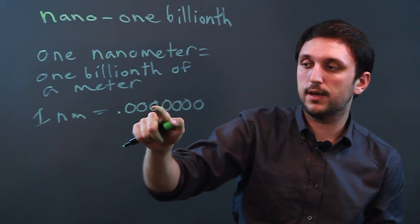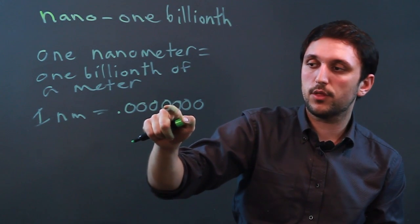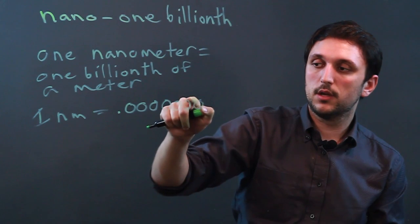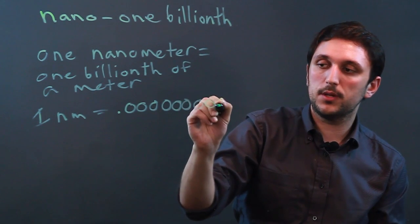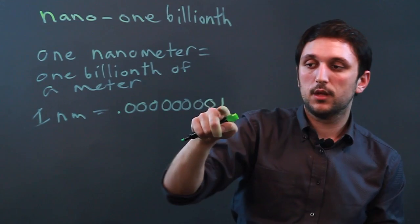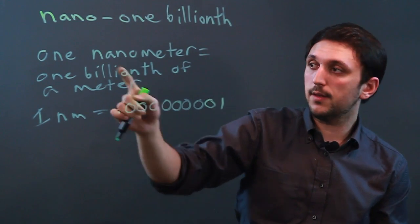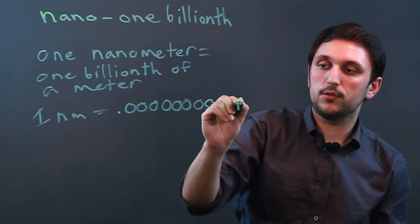You go tenths, hundredths, thousandths, ten thousandths, hundred thousandths, millionth, ten millionth, hundred millionth, billionth. And that is where you put your one if you're dealing with a nanometer and then you say meters.